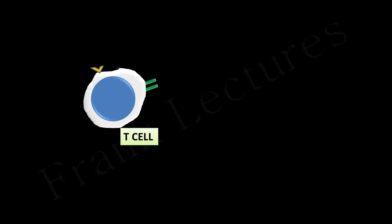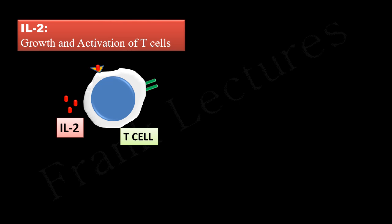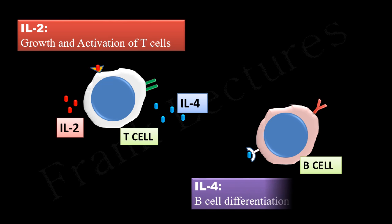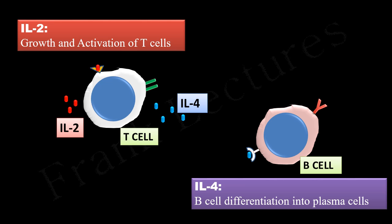For example, a T cell secretes interleukin-2 (IL-2), which binds to the cytokine receptor on the same T cell — this is an example of autocrine signaling. IL-2 results in growth and activation of T cells. T cells also secrete interleukin-4 (IL-4), which binds to the cytokine receptor on B cells, resulting in differentiation of B cells into plasma cells.